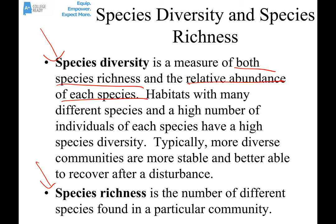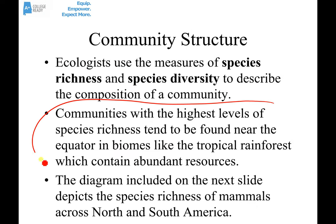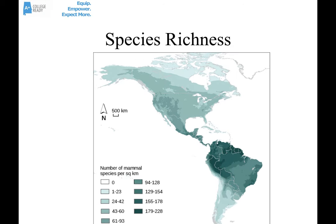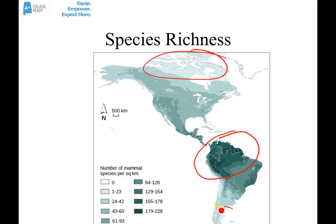Habitats that are high in species richness and diversity tend to be more stable and better able to recover after some kind of environmental disturbance. Communities with the highest levels of species richness are usually found near the equator, in biomes like the tropical rainforest, because there's lots of water, nutrients, food, and resources. A diagram showing species richness of mammals in North and South America confirms this — the darkest green areas, indicating the highest richness, are right where the equator runs in mostly tropical rainforest, while the least rich areas are up in the Arctic and near Antarctica.